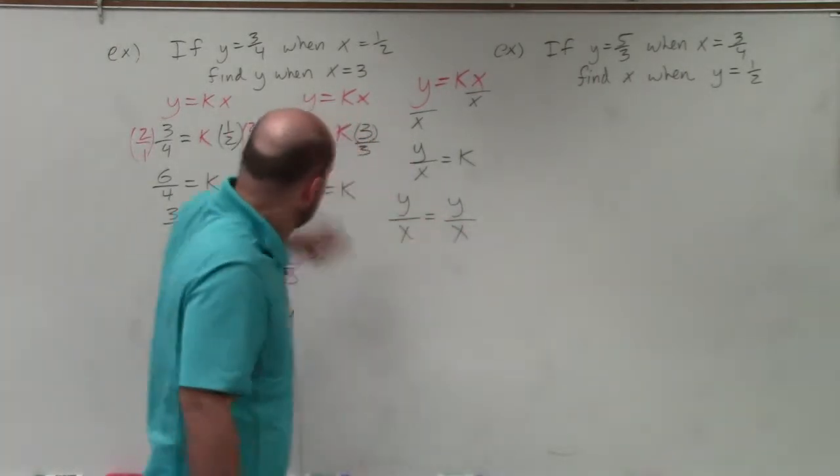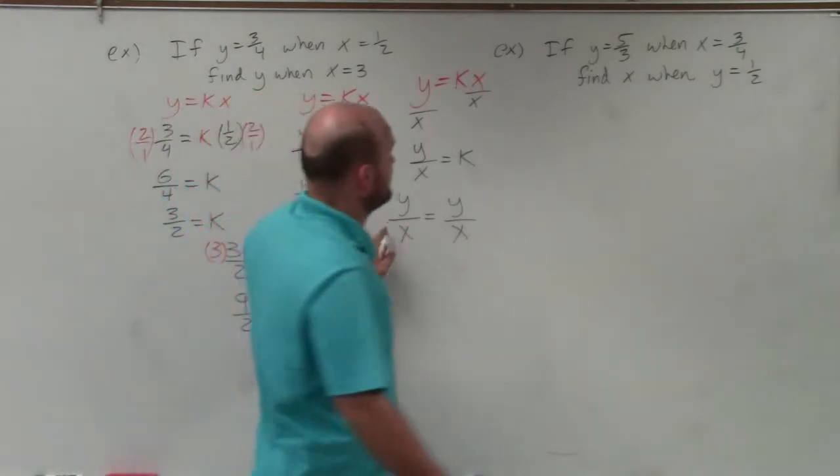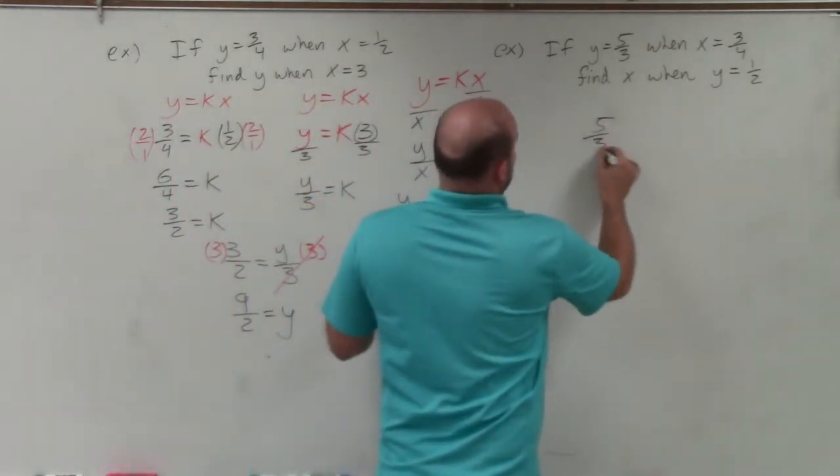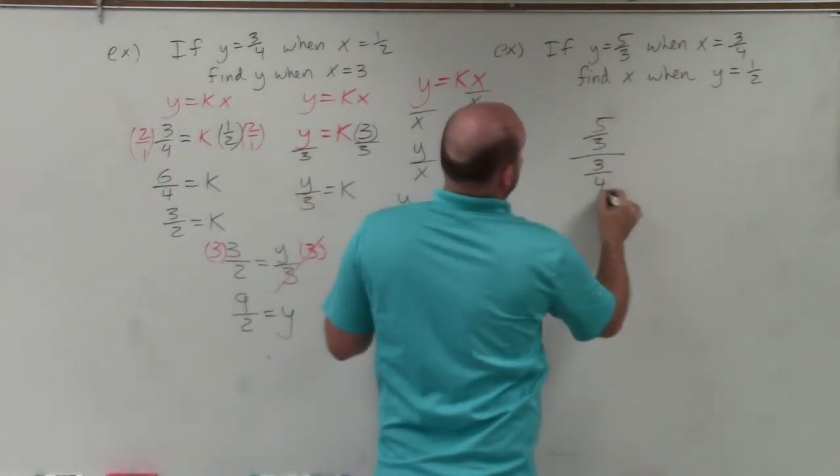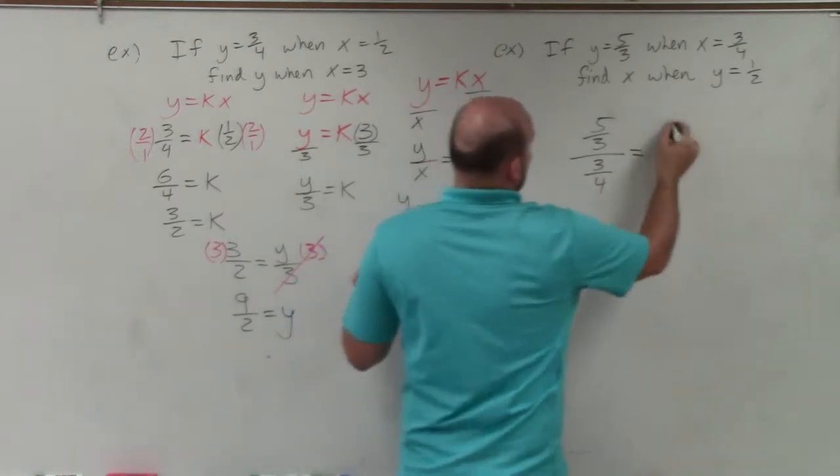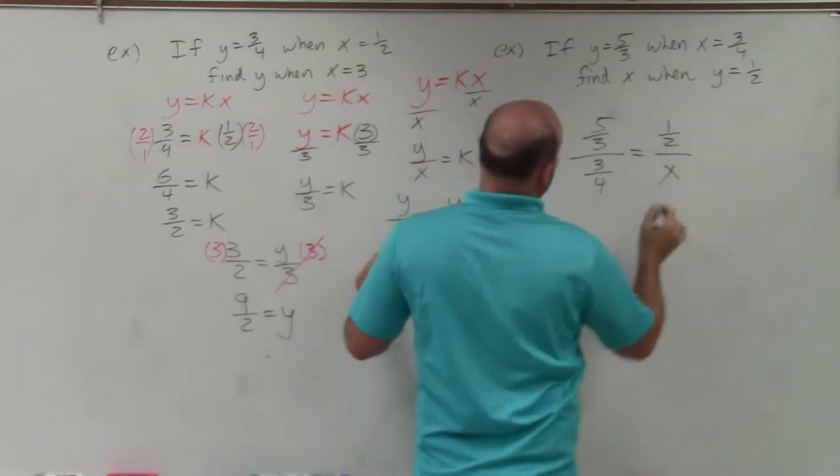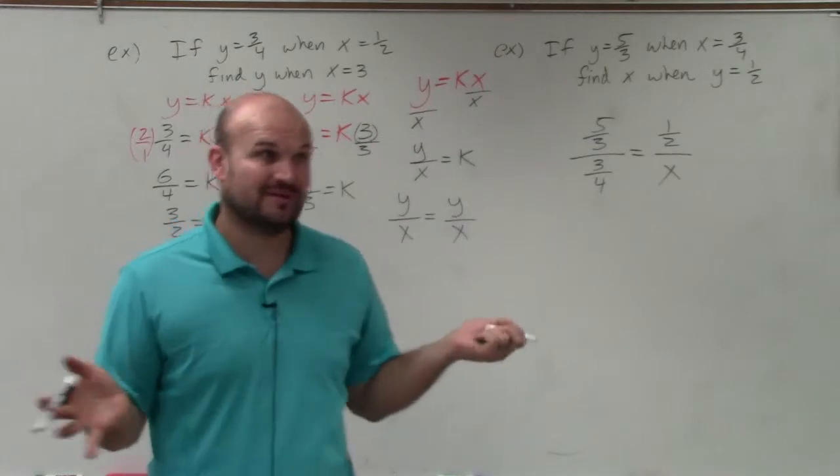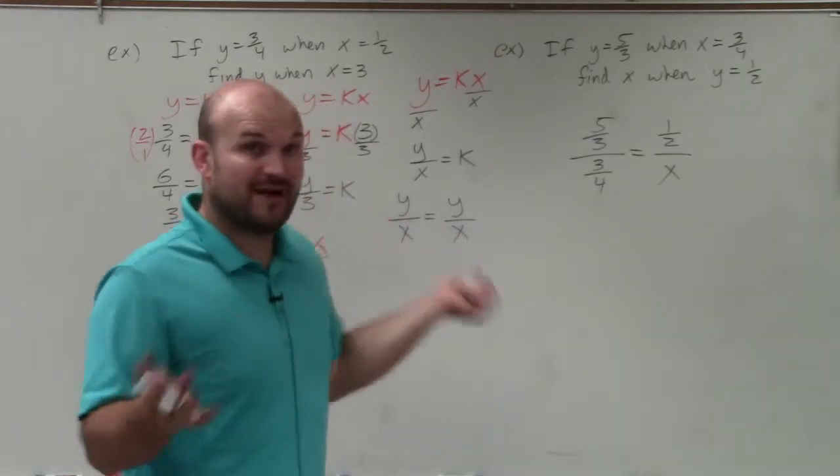So in this case, I'm not going to go through the steps I did here. I'm just going to set up the proportion. So I'm going to say 5 thirds over 3 fourths is equal to 1 half over x. And this gets a lot of students going, because it's like, whoa, what do I do when I have fractions over fractions?